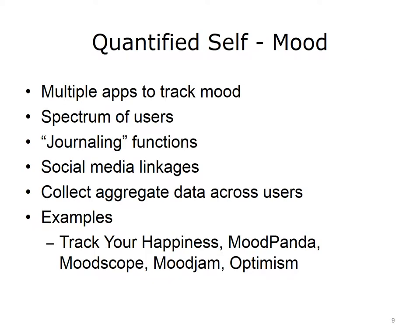There are applications that allow patients to track their mood for a variety of reasons. There is a spectrum of users, from those seeking to understand or analyze factors that influence their mood for self-discovery, to those diagnosed with mental health disorders like depression. Several apps allow users to journal about their mood, either by answering questions or logging data. Many allow users to share mood data over social media, and even have some interactions with other users. For example, Mood Panda allows for sharing of virtual hugs. Some apps seek to pool user data to glean insights into factors associated with happiness, with the goal of improving this outcome in the general population. Examples include Track Your Happiness, Mood Panda, Mood Scope, Mood Jam, and Optimism, among others.